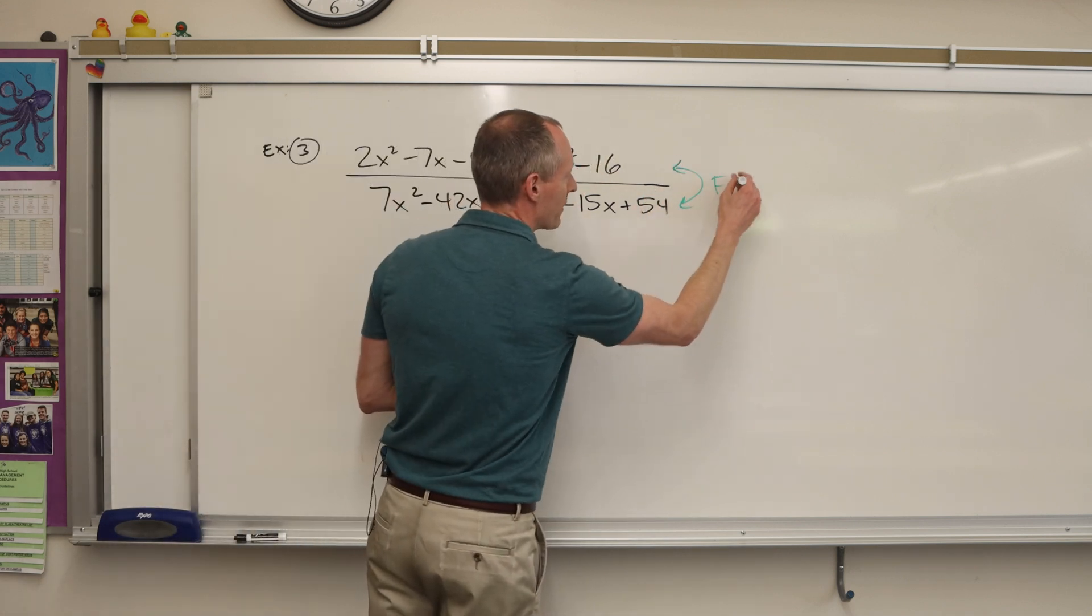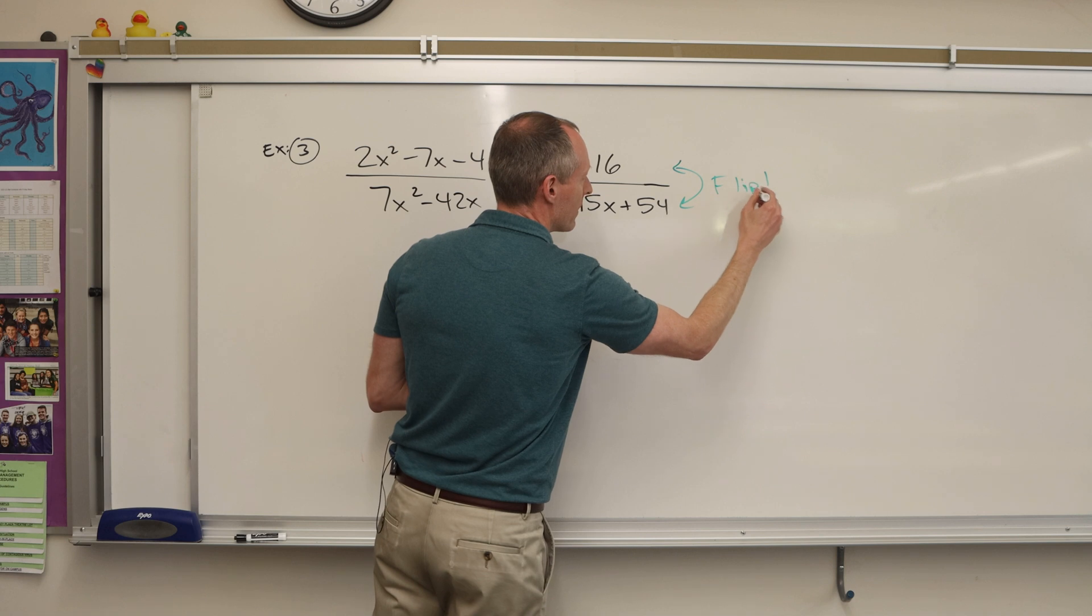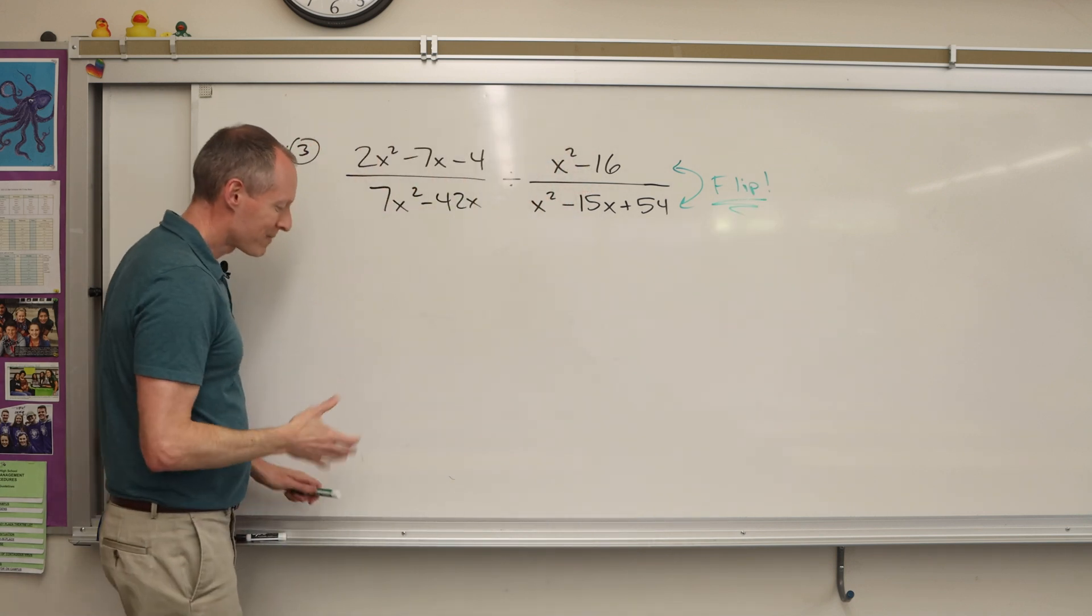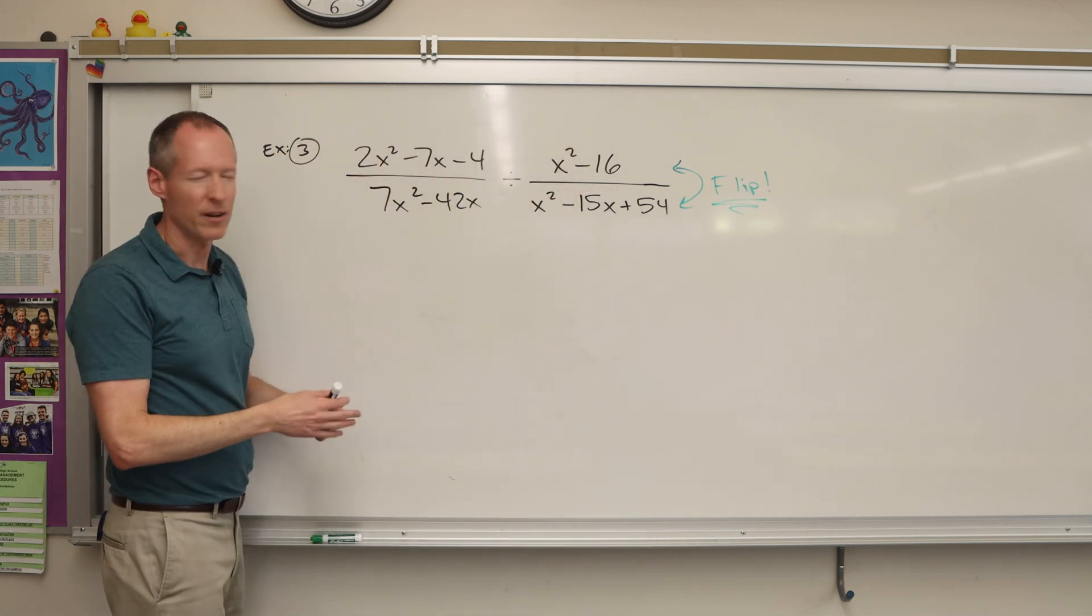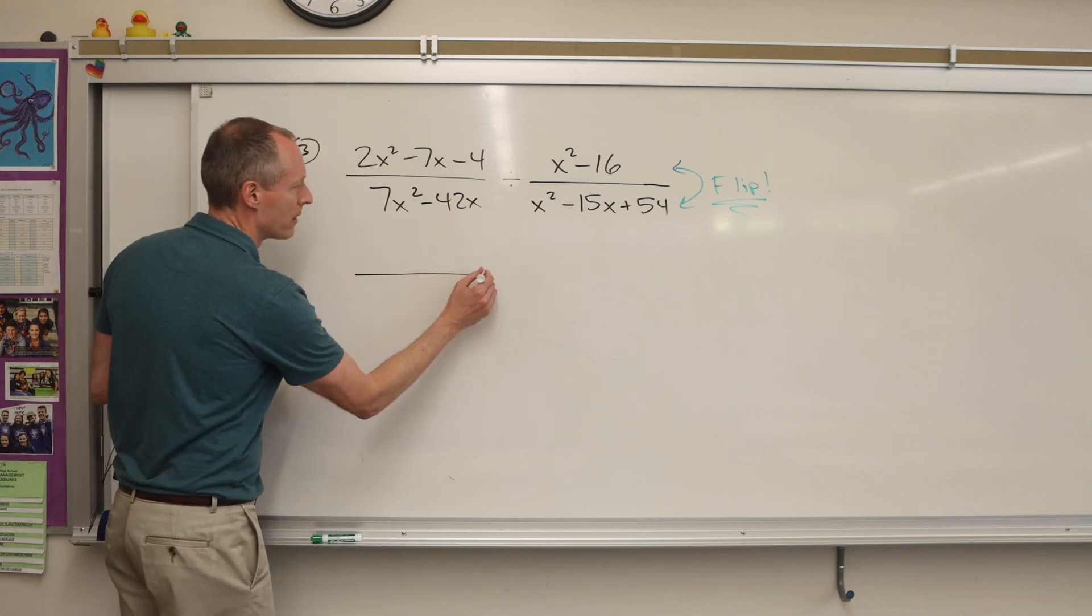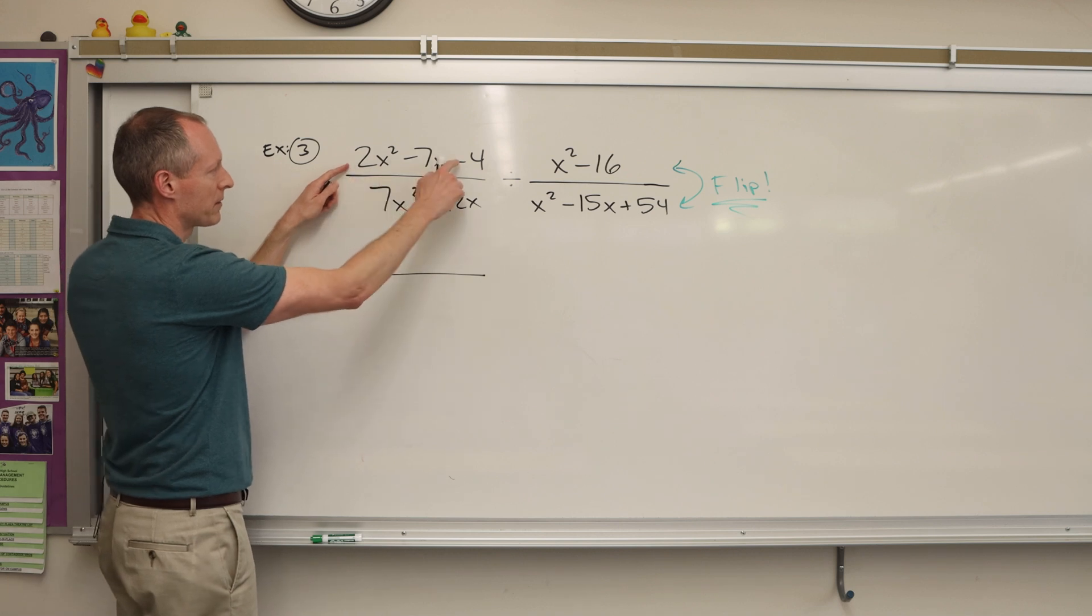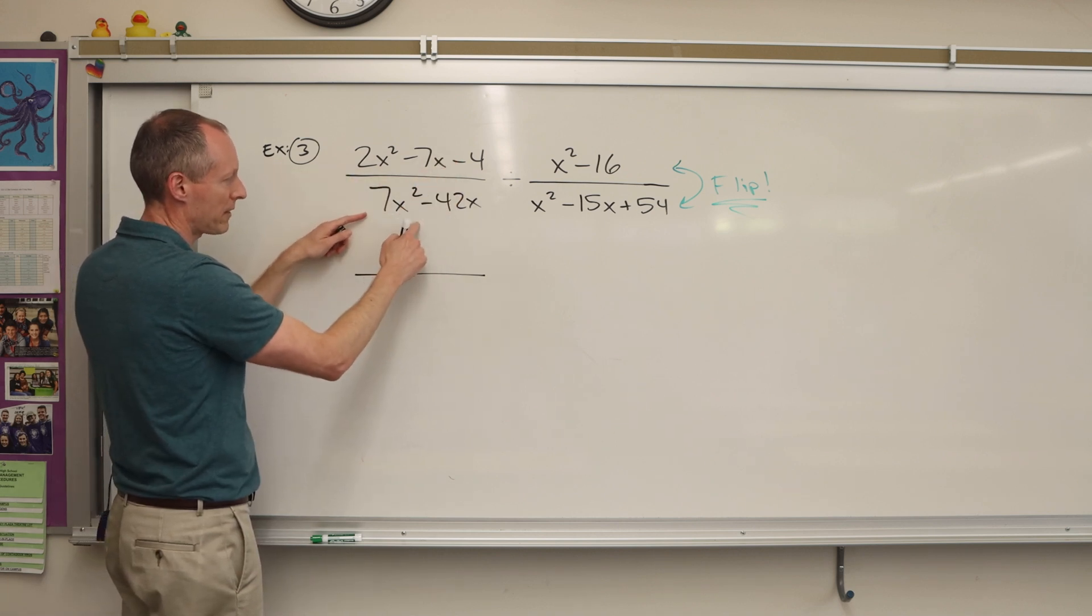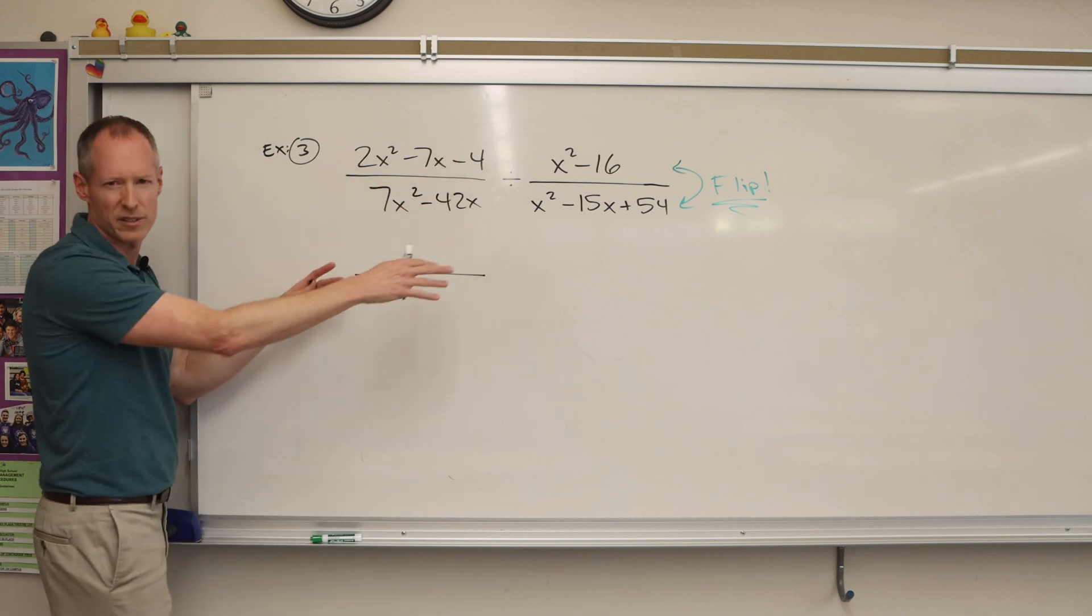And it's the second one that always gets flipped. And to save time, because there's a lot going on in these problems, we can factor as we go and as we flip it. So let's just start with this first part. So we're going to factor this, and factor this, and then we'll do the second part.